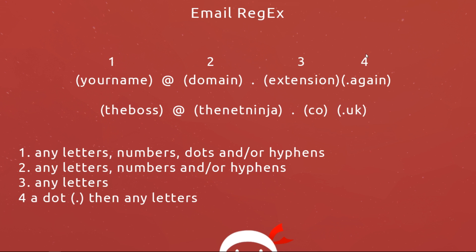We also have a fourth optional part, which is another dot and then the extension again — so 'dot uk'. Sometimes the extension is one word like 'dot com' or 'org', and sometimes it's two words like 'dot co dot uk'. This second part of the extension, number four, is going to be optional. Number three is compulsory because they all have at least one extension like 'dot com', but this second one is optional.